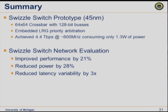In summary: the Swizzle Switch prototype is a 64-by-64 crossbar with 128-bit buses, with least recently granted priority embedded within the network. It achieved 4.4 terabits per second at about 600 MHz, consuming about 1.3 watts. In the NOC-based system evaluation as a flat crossbar, it improved performance by 21%, reduced power by 28%, and reduced latency variability by 3x — a good building block for NOC systems with large radix crossbars.